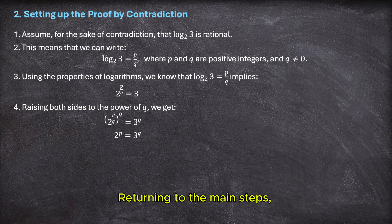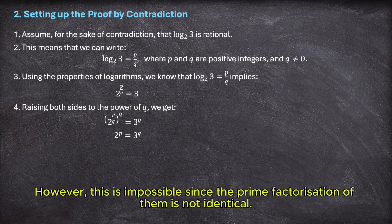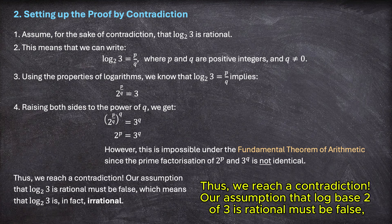Returning to the main steps. If we assume that 2 to the power of p equals 3 to the power of q, according to the fundamental theorem of arithmetic, both sides must have the same prime factorization. However, this is impossible since the prime factorization of them is not identical. Thus, we reach a contradiction.